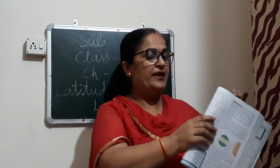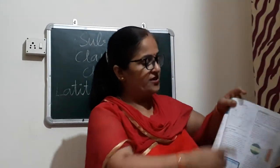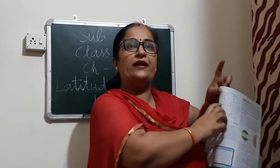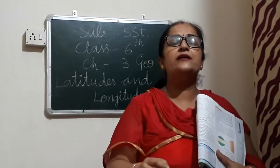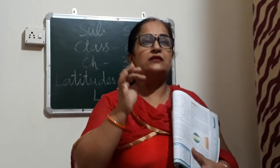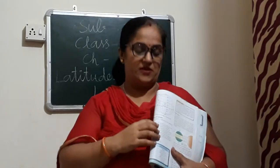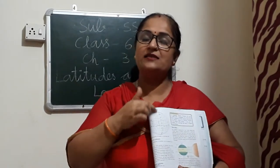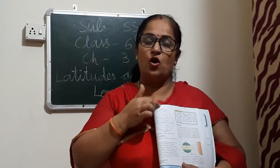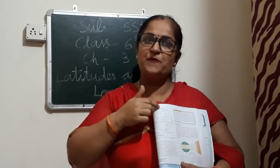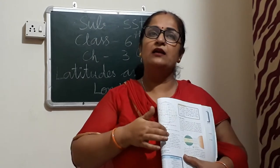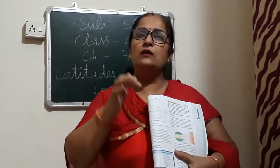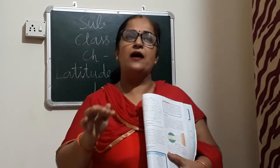The equator is the middle line. In this picture you can see — this is the equator. The northern upper side is known as the northern hemisphere, and from the equator downside to the south pole is the southern hemisphere.